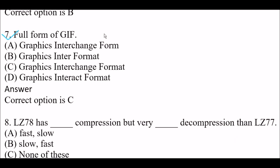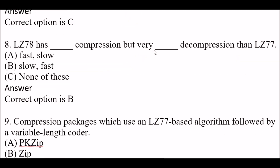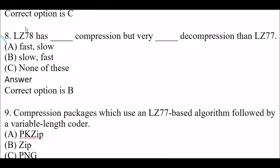Full form of GIF: Option A: Graphics Interchange Form. Option B: Graphics Interformate. Option C: Graphics Interchange Format. Option D: Graphics Interact Format. The right answer is Option C — Graphics Interchange Format.